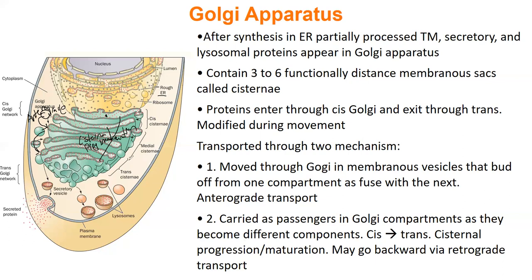The third type of movement is retrograde — if you're in the medial, you can go back to the cis. So three types of movement: anterograde, you bud off and go forward; retrograde, you bud off and go backward; or cisternal progression, you just hang out and ride all the way to the end. Once you're in the trans, you're secreted as a vesicle and will either go to the plasma membrane or to the lysosome, based on your original signal peptide and where you need to go.